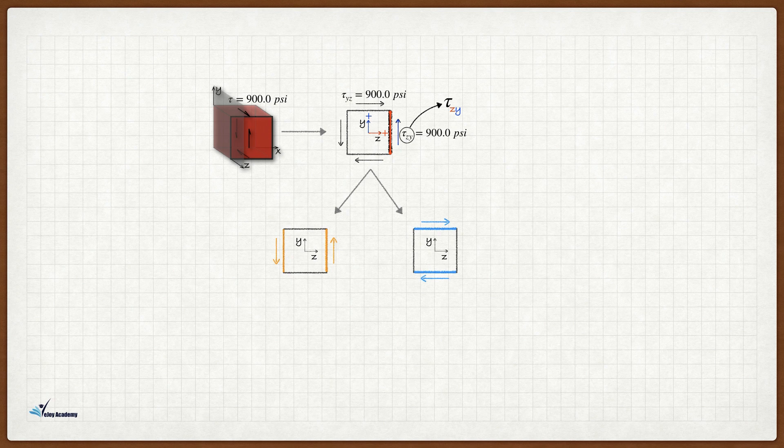We follow the stress sign convention for the Mohr circle which says for normal stress, tension is positive and compression is negative. In this problem both normal stresses are zero.